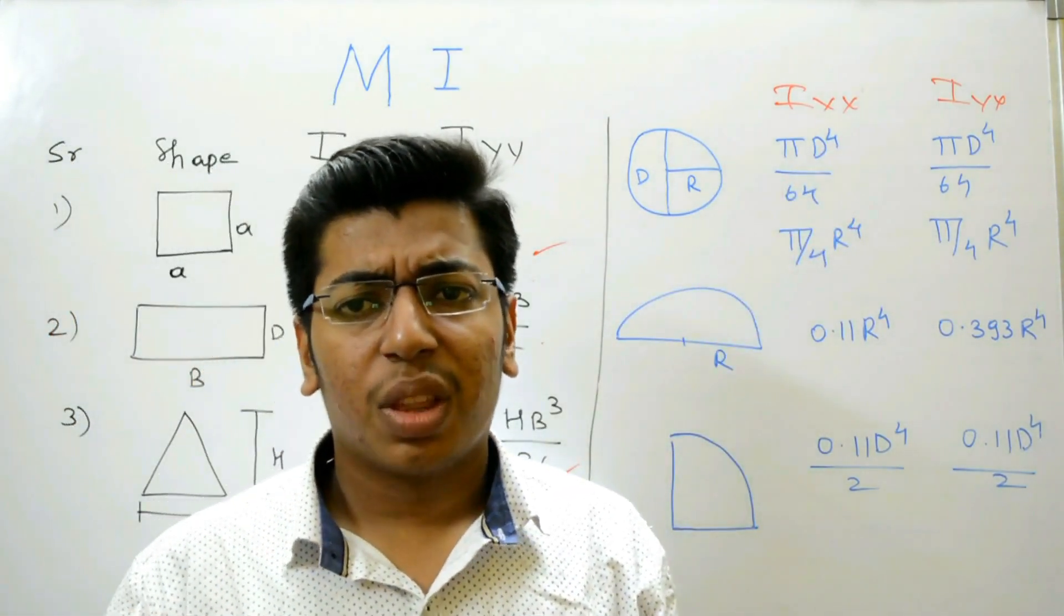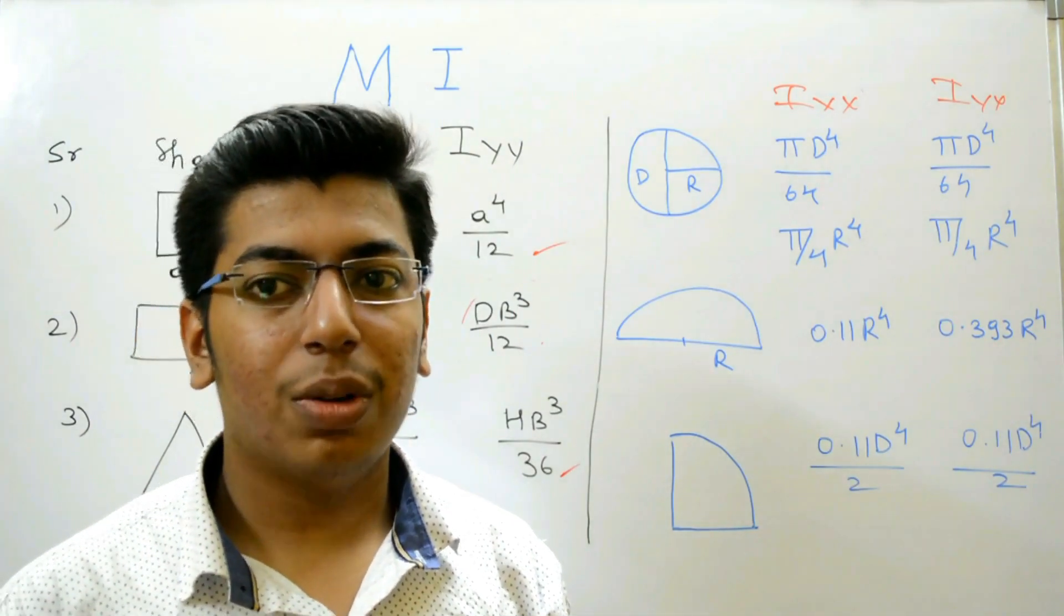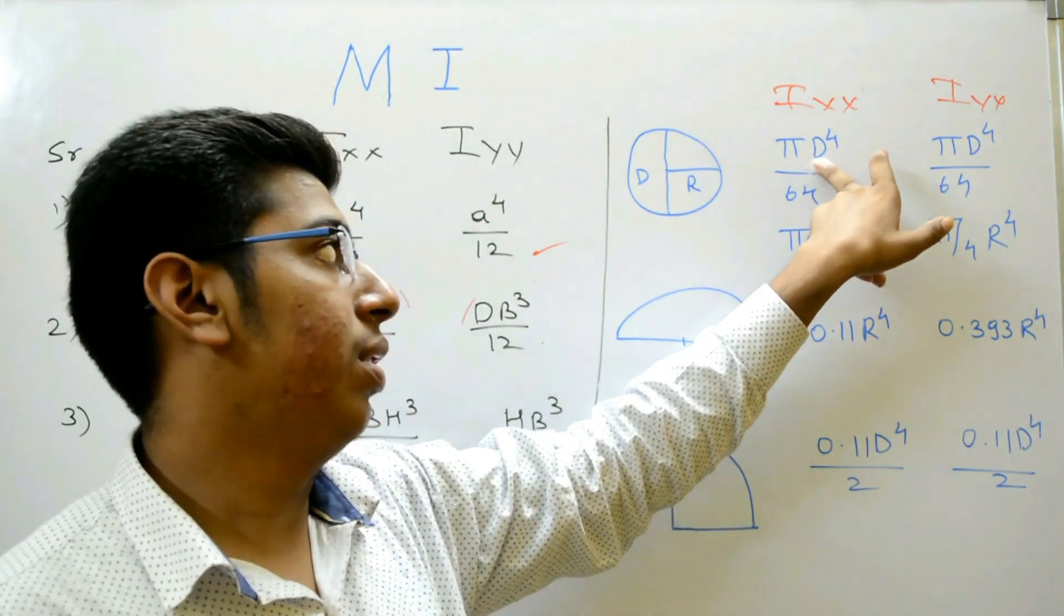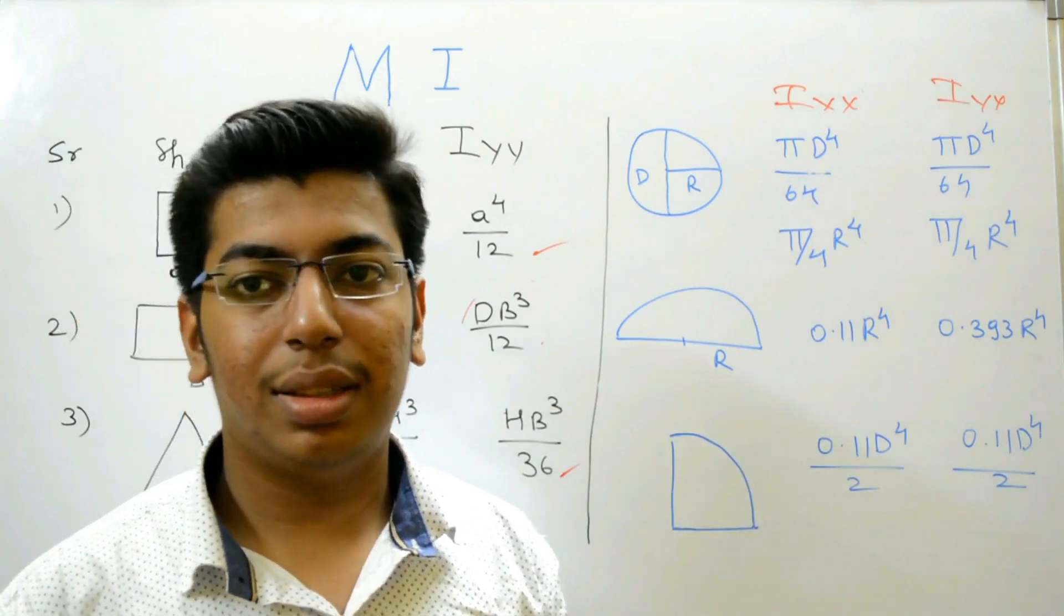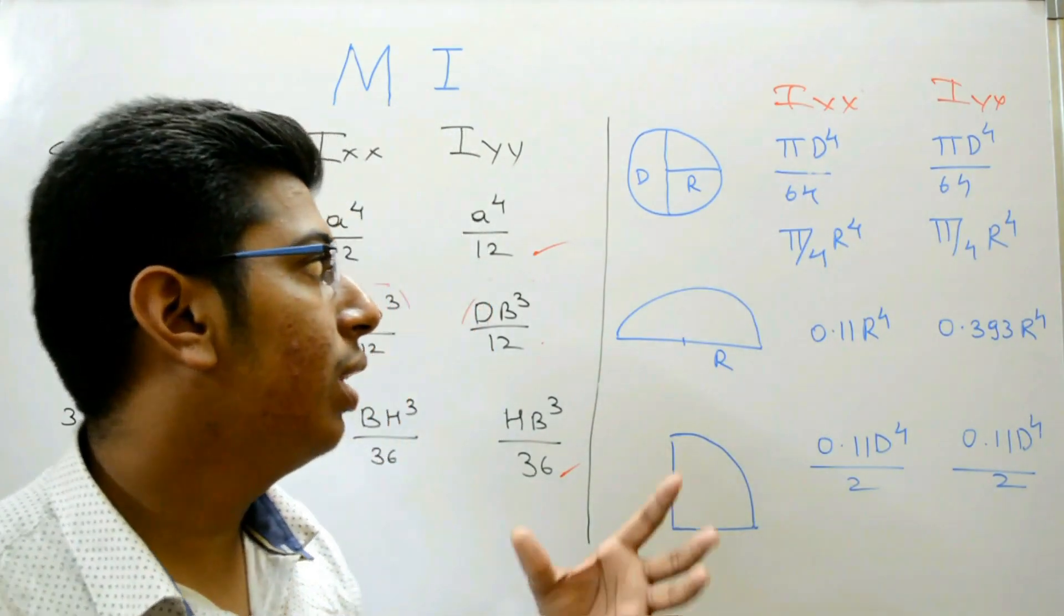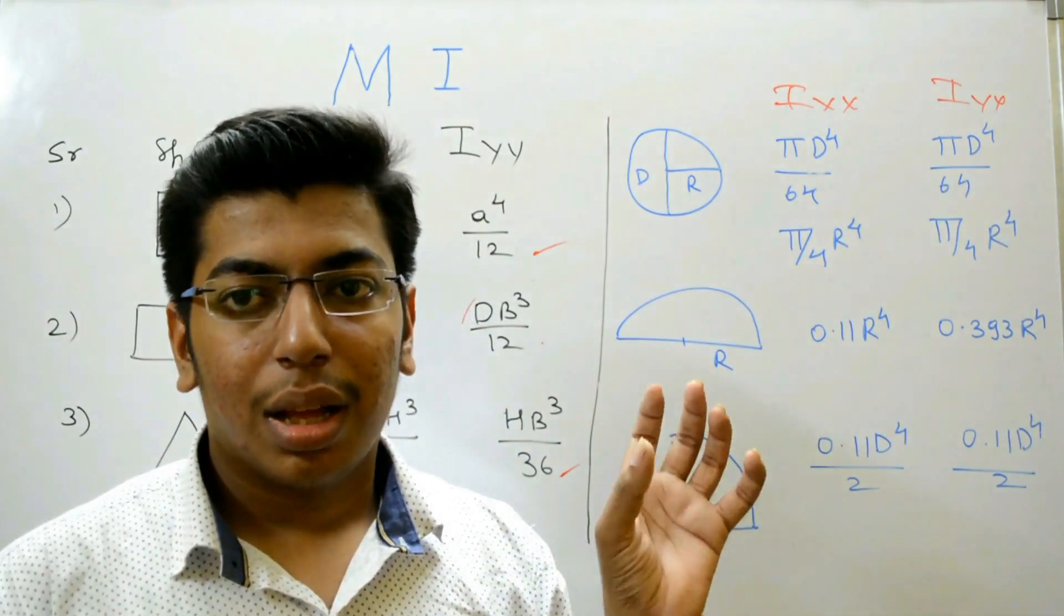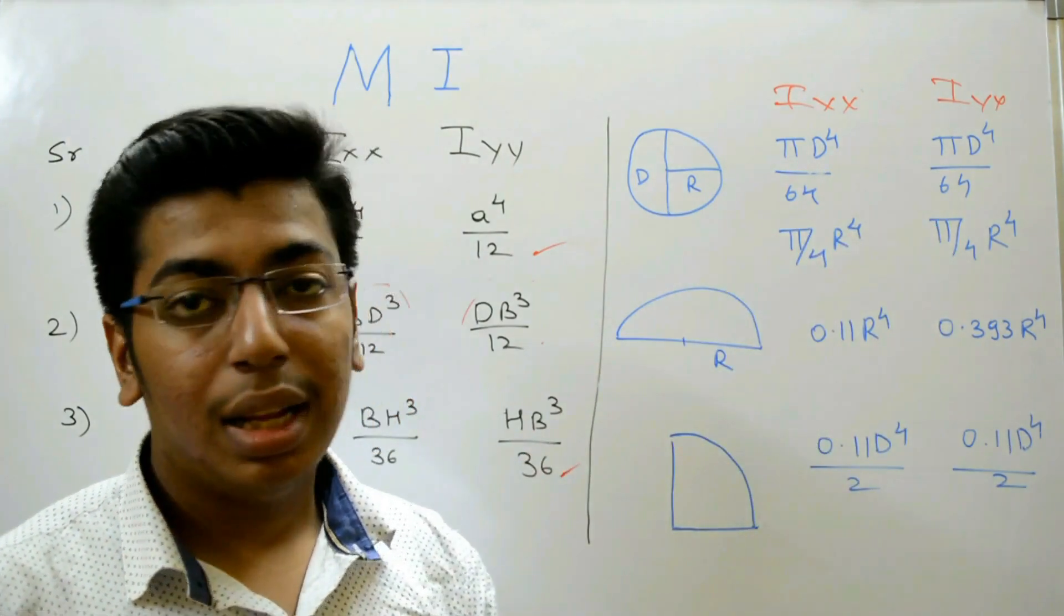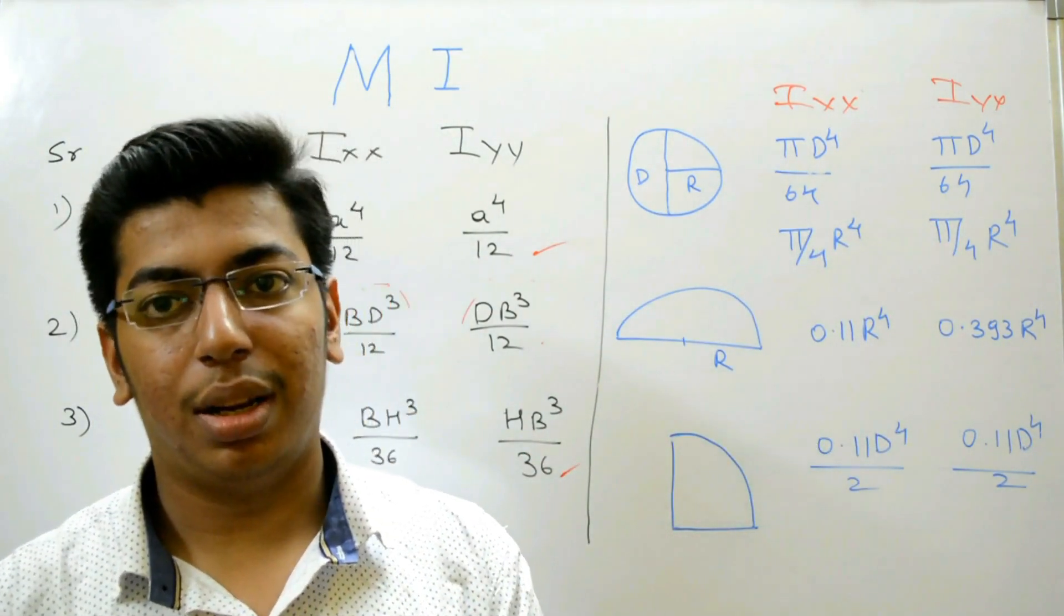Why I am repeating it? Because I know people make mistake over there. People take here R instead of D, then the whole formula is disturbed. In terms of R, it is pi by 4 R raised to 4 and pi by 4 R raised to 4. In the circle, both Ixx and Iyy are equal.